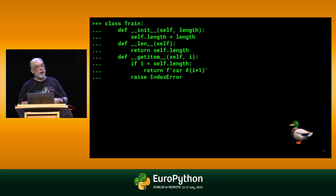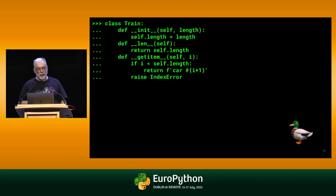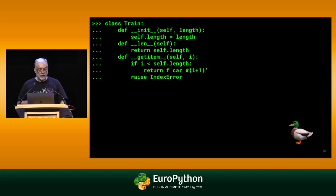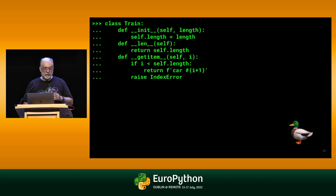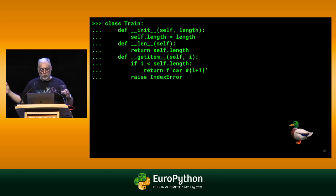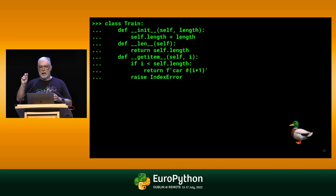Here's a more dramatic example. I have a simple class that represents a train. Its only attribute is a length established when it's constructed. Then we have the __len__ method that returns the length, and the __getitem__ method that checks whether index i is within the range from 0 to length minus 1. If it is, it returns a string saying 'car number such-and-such'; otherwise, it raises IndexError.